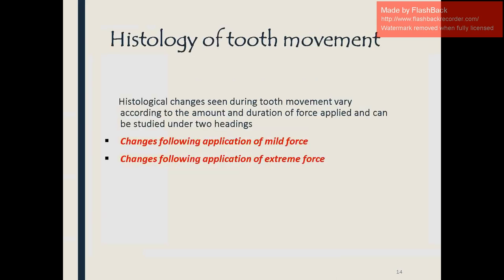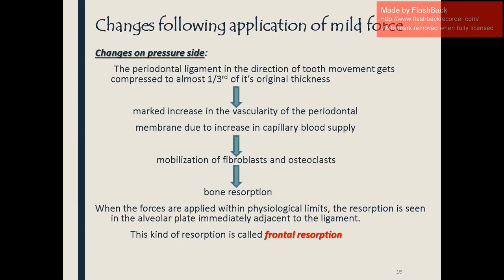Histological changes during tooth movement vary according to the amount and duration of force applied. Changes following application of mild force: on the pressure side, the periodontal ligament in the direction of tooth movement gets compressed to almost one-third of its original thickness. There is a marked increase in vascularity of the periodontal membrane due to increased capillary blood pressure, leading to mobilization of fibroblasts and osteoclasts, resulting in bone resorption. When forces are applied within physiological limits, resorption is seen in the alveolar plate immediately adjacent to the ligament — this is called frontal resorption.